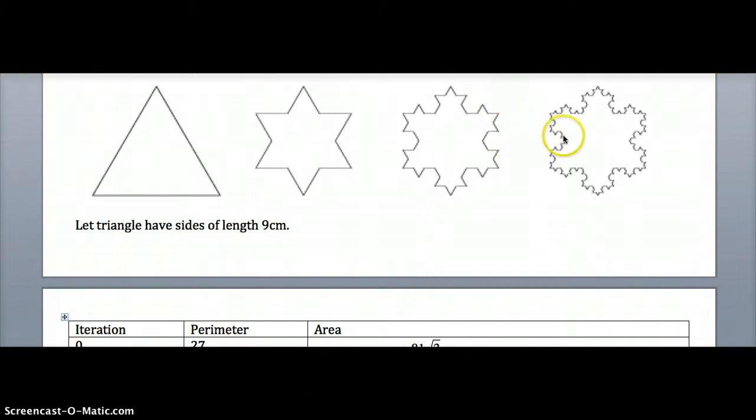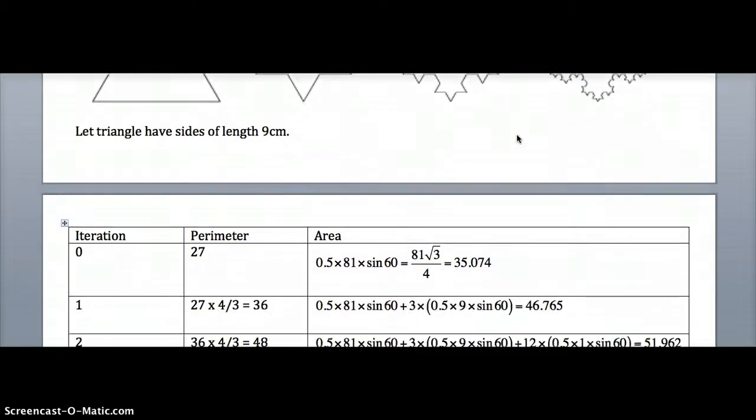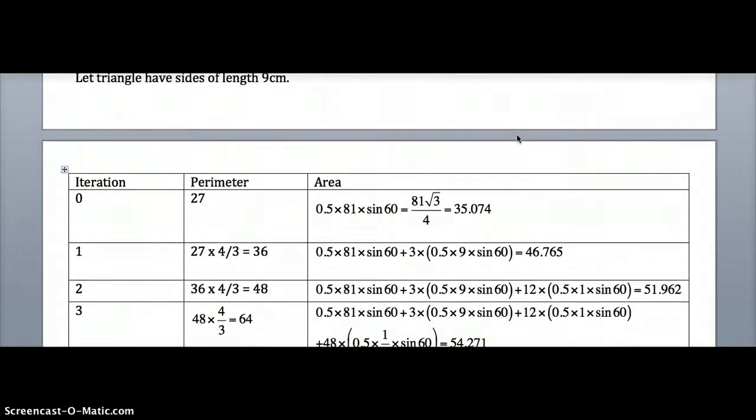It's not too hard to spot that the number of lines multiply by four each time. For 48 is 192, so you could multiply 192 by a third, or just take the answer for the third one which was 48 and multiply it by four over three and you get 64.